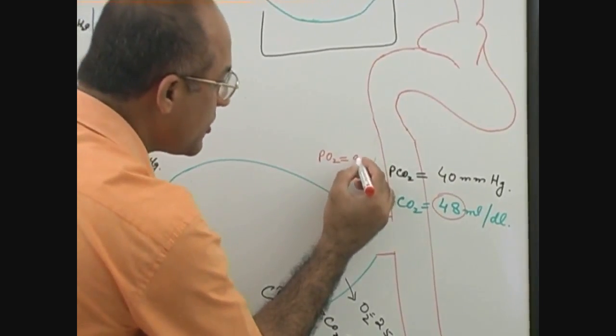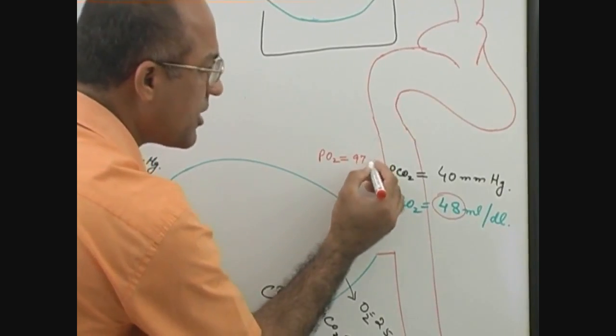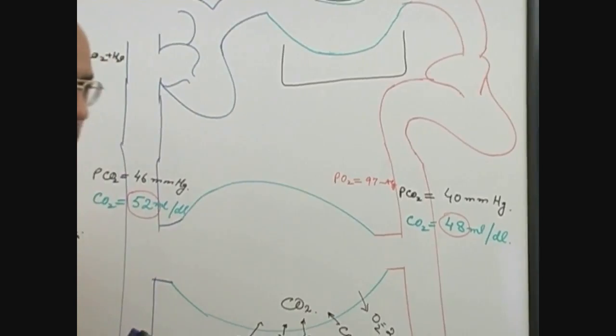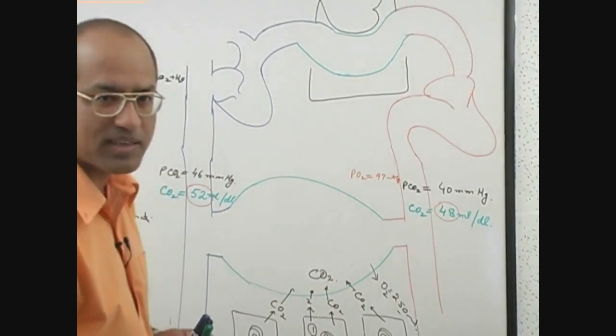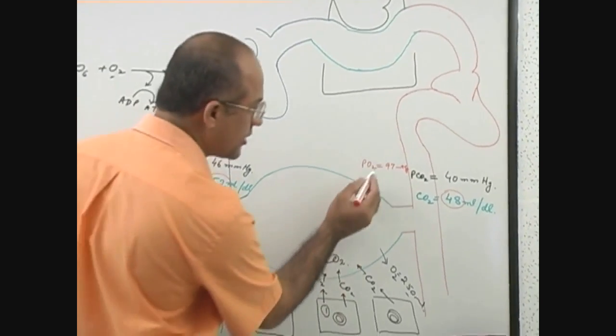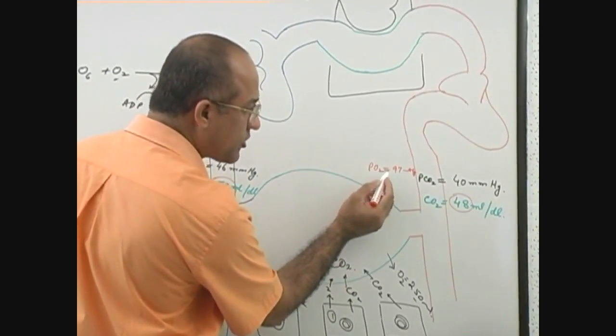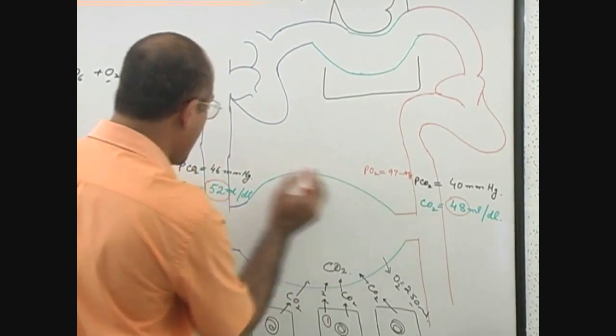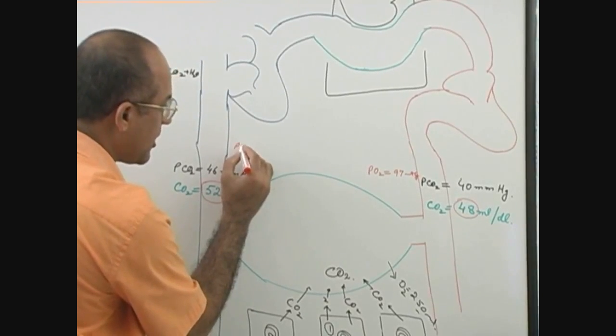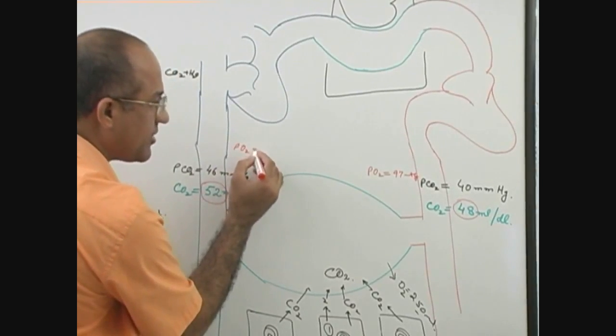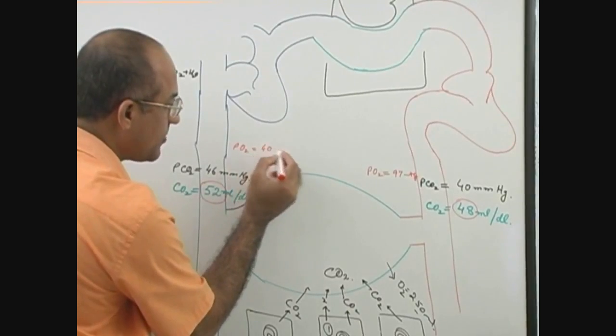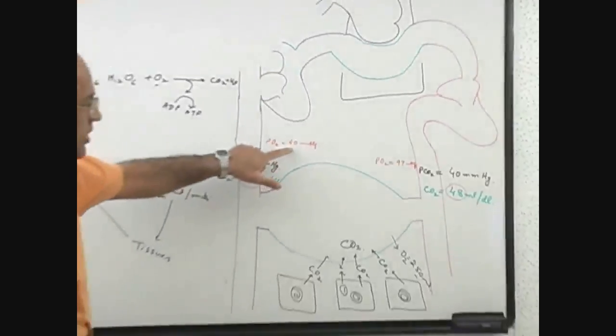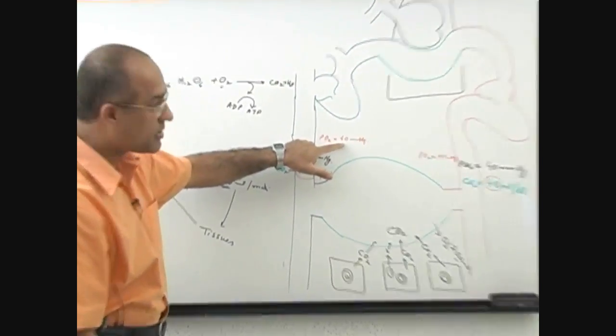97 mmHg, or for your personal convenience you can say 100 mmHg and international literature will agree with you. It's very near to the reality. Partial pressure of oxygen on arterial side is 97 or 100 mmHg. Partial pressure of oxygen on venous side is 40 mmHg.